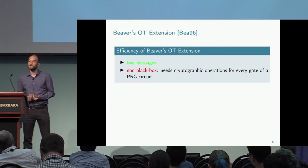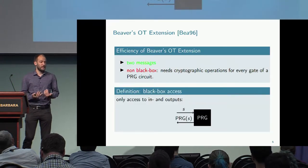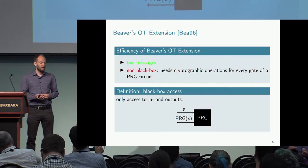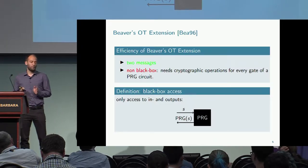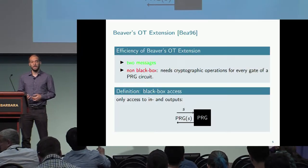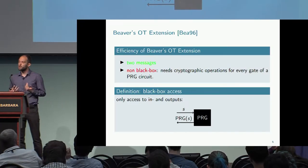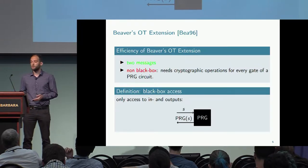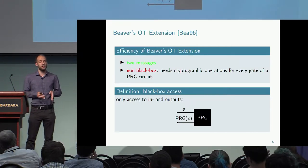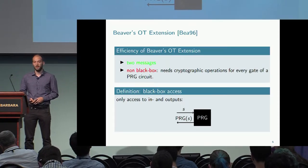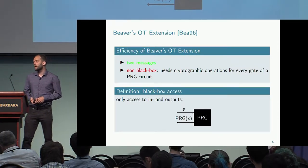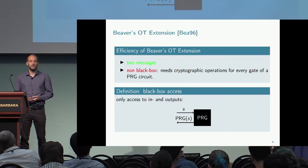However, Beaver's construction has a drawback: it uses non-blackbox techniques. With blackbox access to a cryptographic primitive, we only look at its input-output behavior — for example, treating a PRG as a blackbox means caring only about the seed input and the output, not how the PRG operates internally. That is typically how we use cryptography. But for Beaver's construction, you need to look into the code of the PRG circuit and perform cryptographic operations for every gate of that circuit, which is a significant efficiency drawback making this OT extension less relevant for practice.